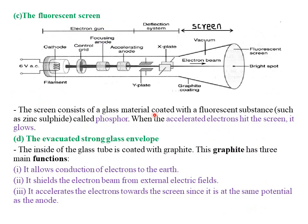Lastly, we look at the fluorescent screen. This is simply where our bright spot forms. It has special materials which glow whenever the electron beam hits it — the same concept used in fluorescent bulbs where powder placed inside glows when the electron beam hits the fluorescent material, producing light. The screen consists of a glass material coated with a fluorescent substance such as zinc sulfide, called the phosphor. When the accelerated electrons hit the screen, it glows, producing a bright spot.